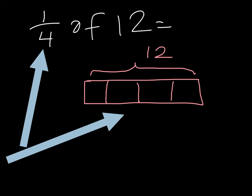What happens when you do that? The 12 gets split into fourths, and each part gets 3.